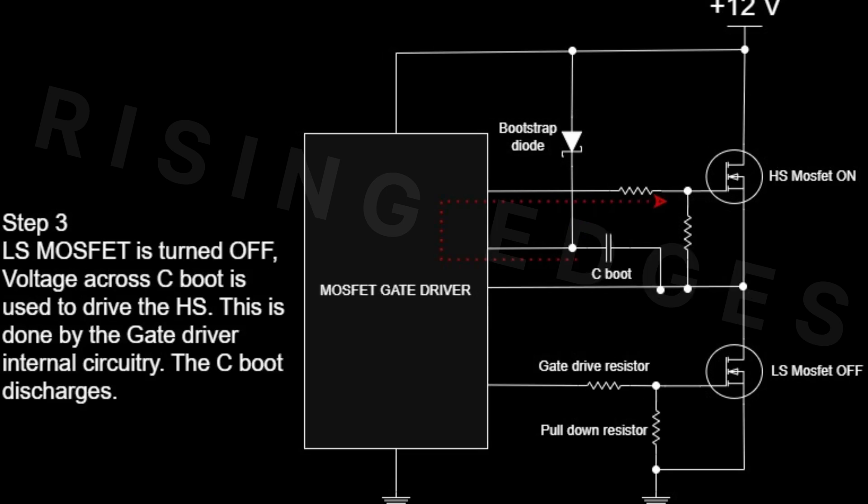With the low-side MOSFET still OFF, the driver now uses the voltage across the bootstrap capacitor to turn ON the high-side MOSFET, and C-boot discharges slightly as it applies the VGS across the MOSFET.